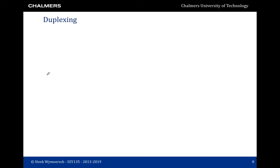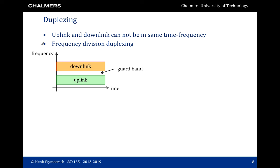The first problem we face is duplexing — the separation of uplink and downlink transmissions. Uplink and downlink cannot share the same time-frequency resources. One way is FDD, frequency division duplexing, where the available frequency band is split into an uplink band and a downlink band with a guard band in between. All uplink communication happens in the uplink band while all downlink communication happens in the downlink band. Within the uplink band, we still need to assign resources to different users.